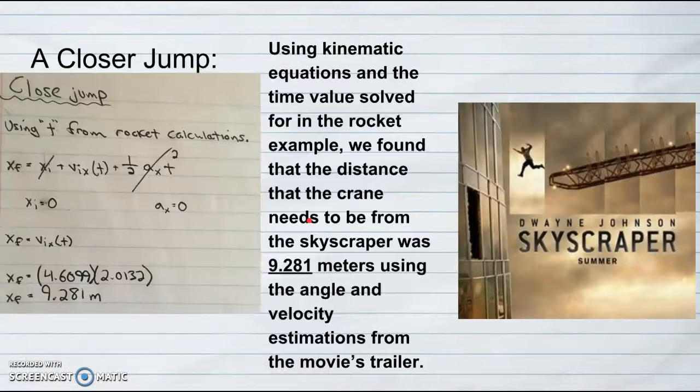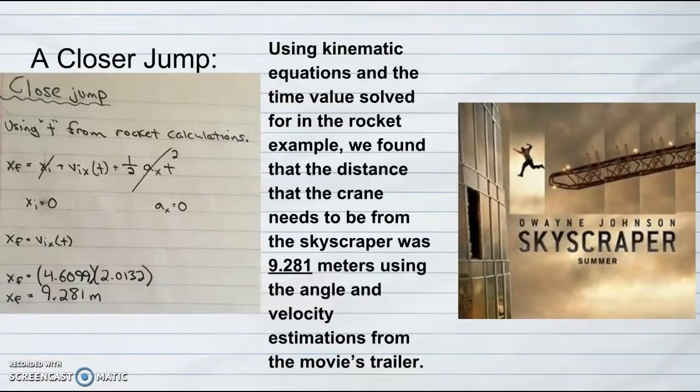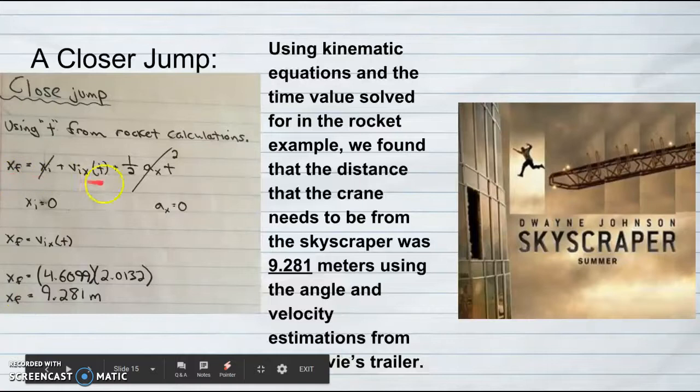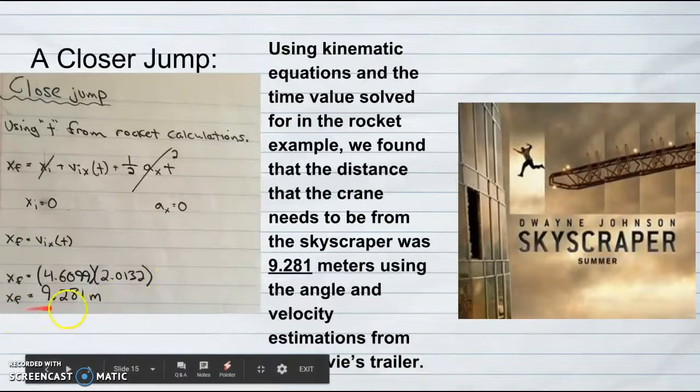Next, we look at the possibility of a closer jump and ask ourselves how much closer the crane will have to be to the skyscraper in order for the jump to be successful. To find the position needed to make the jump at the angle and velocity he jumps at, we used the kinematic equation learned in class. We set x-initial to zero since it is at the tip of the crane, and our x-acceleration was also assumed to be zero, which gives us x-velocity times time. We then plugged in our known values, and we got 9.281 meters.